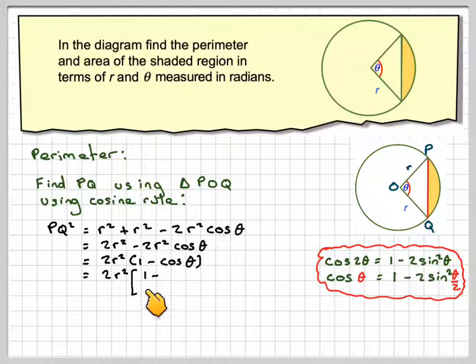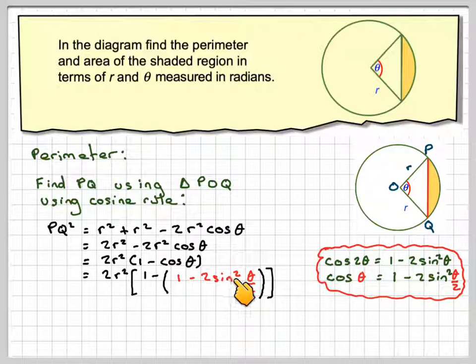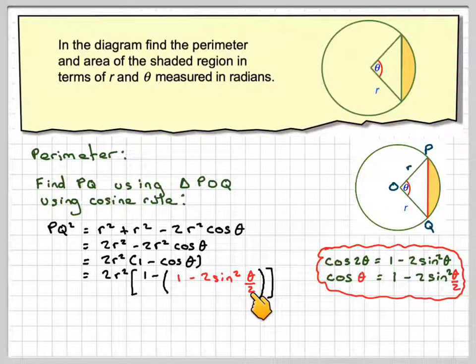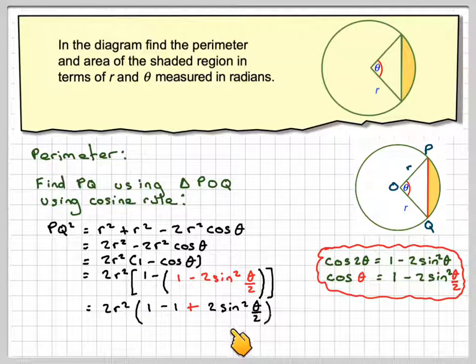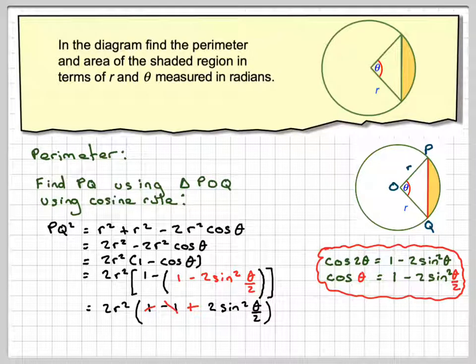So we've got 2R squared times 1, substituting now 1 minus 2 sine squared theta over 2 for cos theta. So we've got 1 minus 2 sine squared theta over 2. And we've got 2R squared, 1 minus 1, minus times the minus makes a plus, 2 sine squared theta over 2. Now 1 minus 1, they just cancel out, and therefore we're going to have 4R squared sine squared theta over 2.